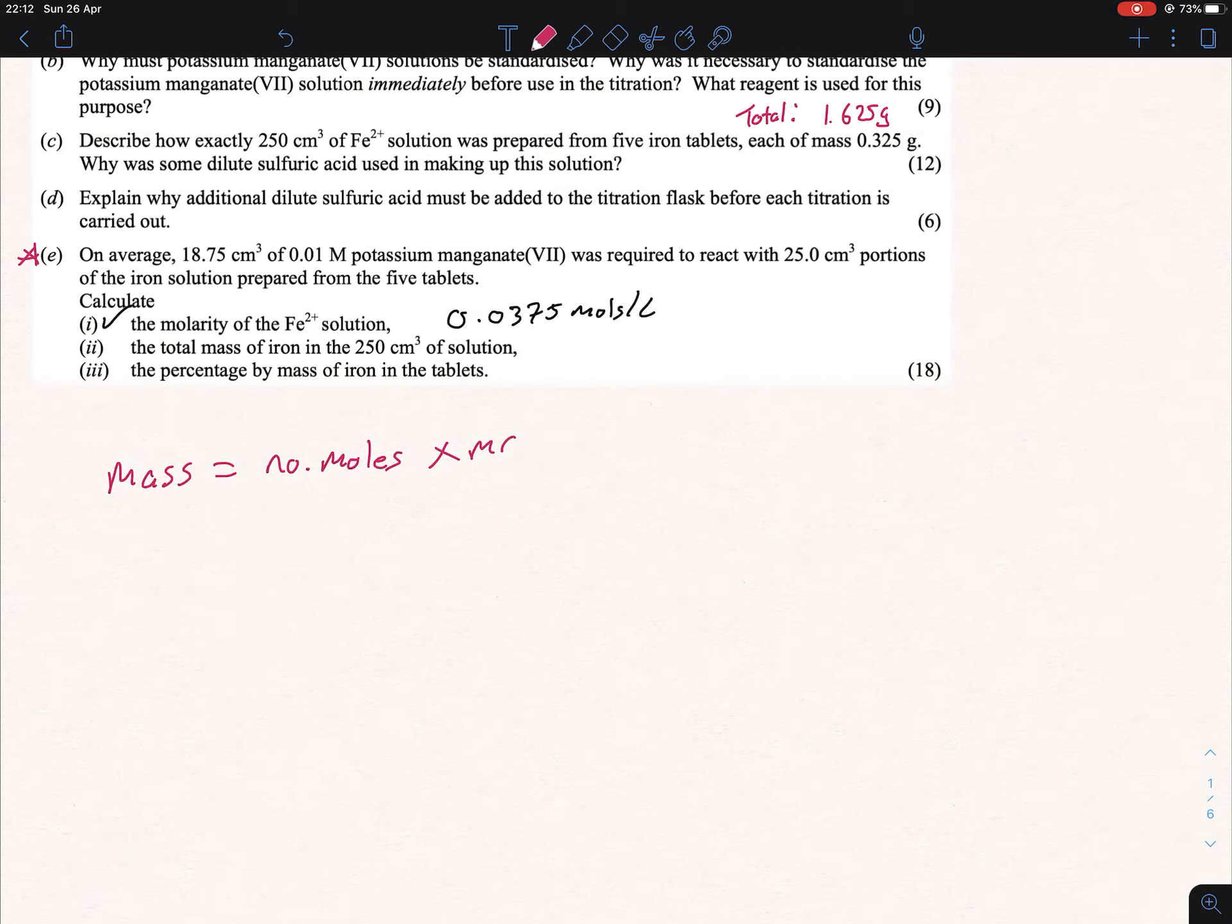Sometimes we represent it as mass per liter equals the molarity times MR - it's the same thing. This isn't molarity because we're dealing in 250 cm³, not liter. Do we have the number of moles and the MR of iron? The MR of iron is handy enough - that's just 56. And we do have the number of moles. We can see at the top here that we have 0.0375 moles per liter.